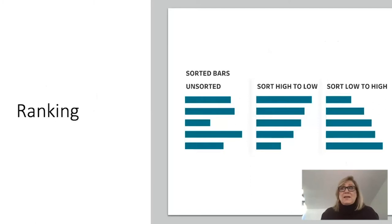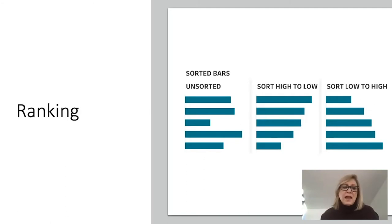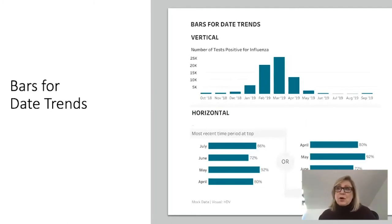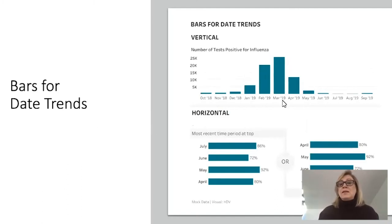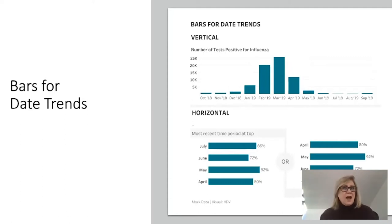Bars can be sorted, which makes them really powerful. You can show nominal categorical data unsorted, or simply sort from low to high or high to low depending on what's important. Bars can also be used for trend — we most often use lines, but if it's important to see the actual data values, bars work well to show data over time, such as when flu tests are highest. You can also show the most recent timeframe at the top or bottom depending on what your audience needs.